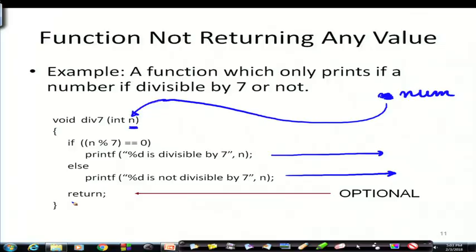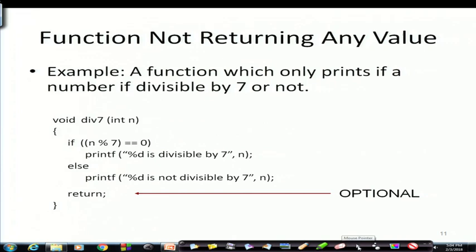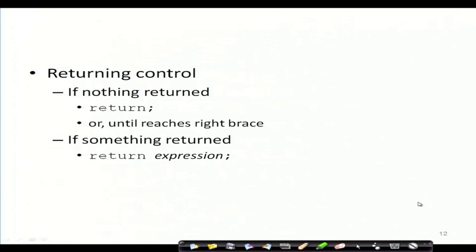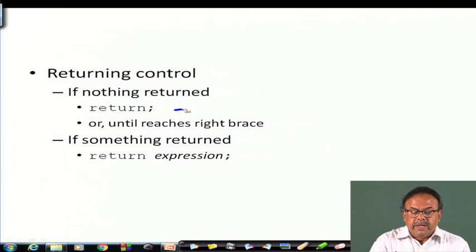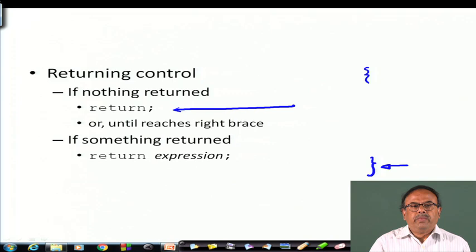In this case, putting a return statement is optional, because even if I did not put the return, when execution reaches the closing brace it would automatically return to the calling point. However, there is no harm in putting the return. So, returning control: if nothing is returned, you can simply write return semicolon, or skip it and let the closing right brace act as the automatic return.